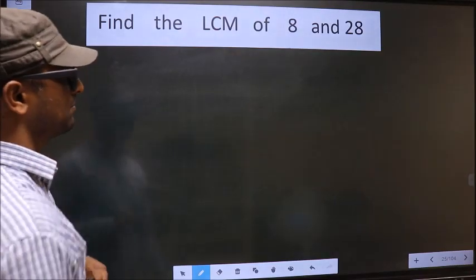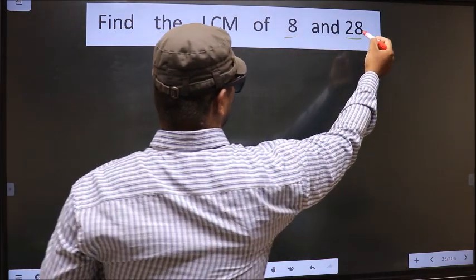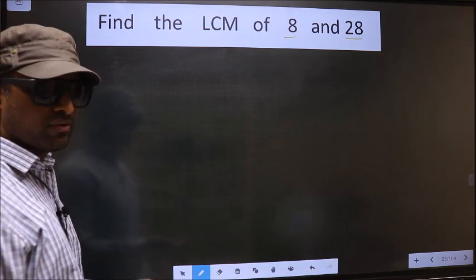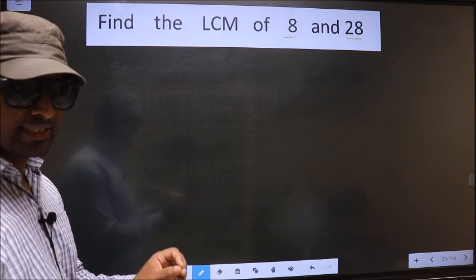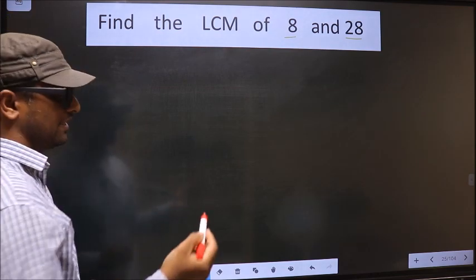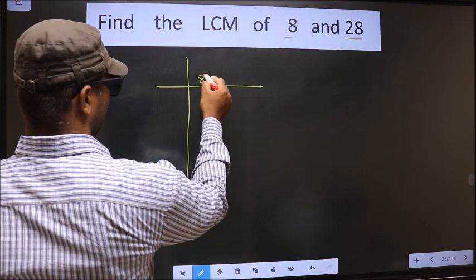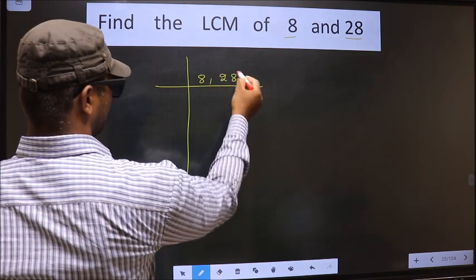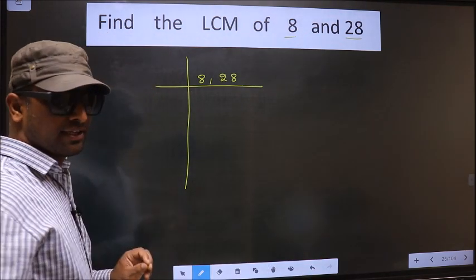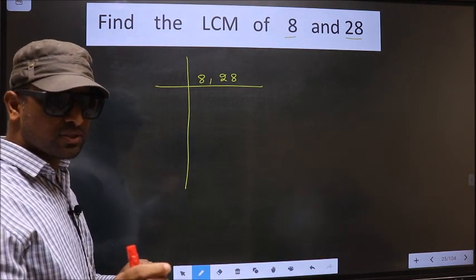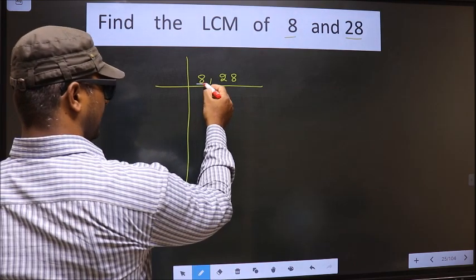Find the LCM of 8 and 28. To find the LCM, first we should frame it in this way. 8 and 28. Now we should focus on the first number, that is 8.